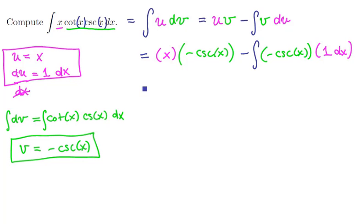So let's clean up what we've got here. We've got negative x times the cosecant of x. And then we are adding negative, negative, the integral of cosecant of x dx.